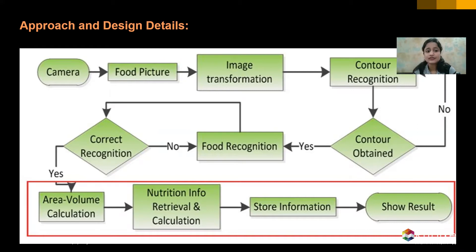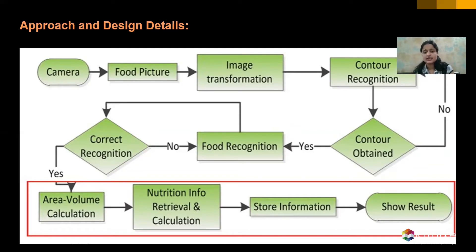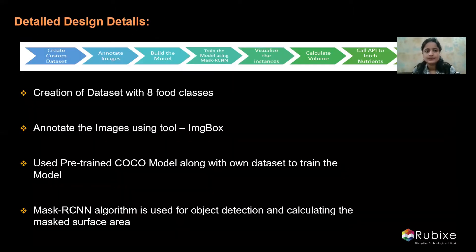Once the user clicks the food item, we obtain contours and through these contours we recognize the food items present in the plate. Once the food is recognized correctly, we determine the area and calculate the volume. These details are then sent to an API, which gives us information about the nutrition — calories, fats, and proteins present in the food — and then we display the results.